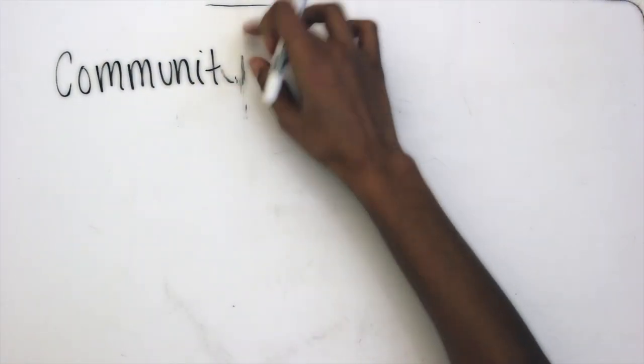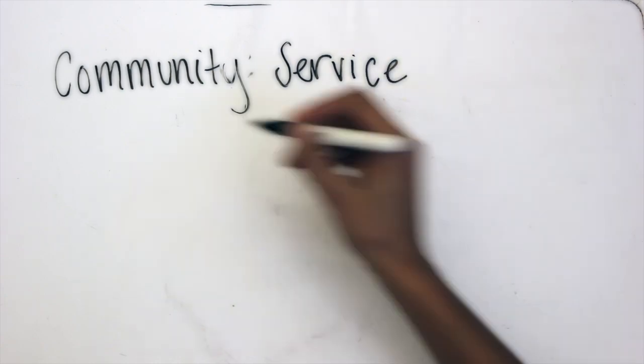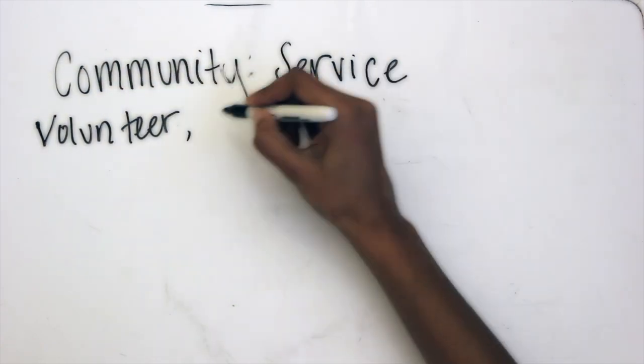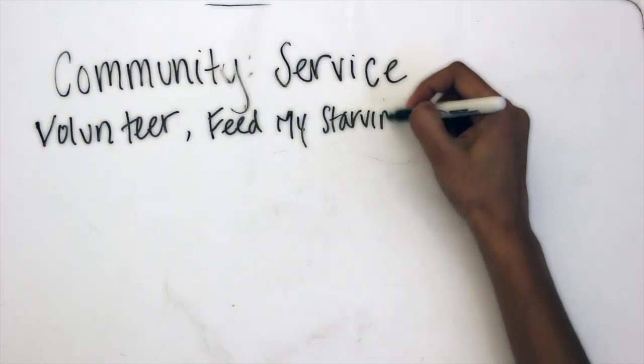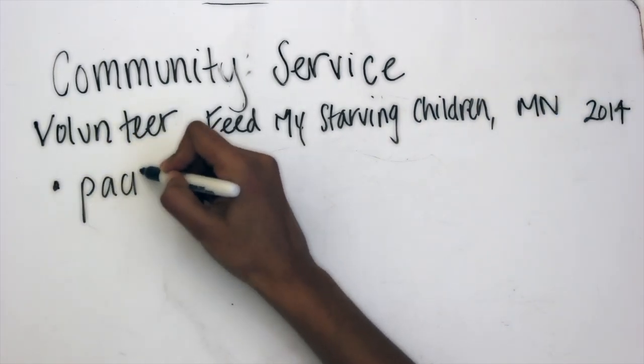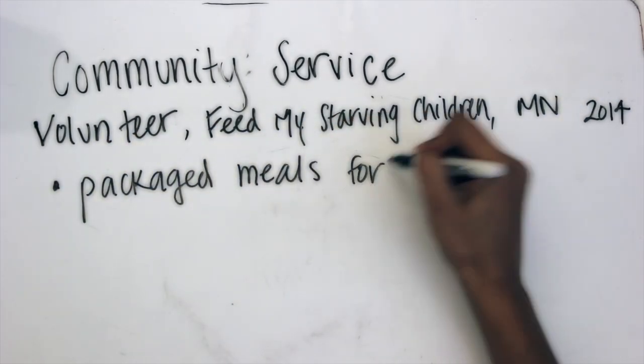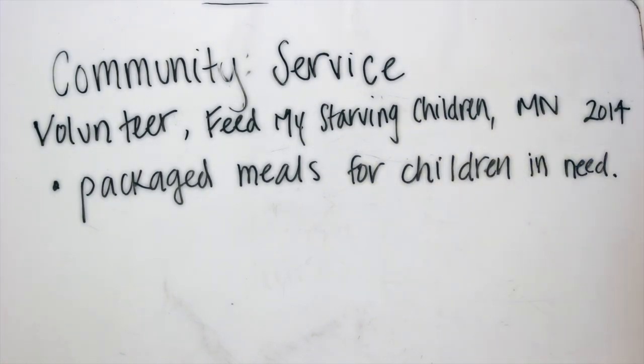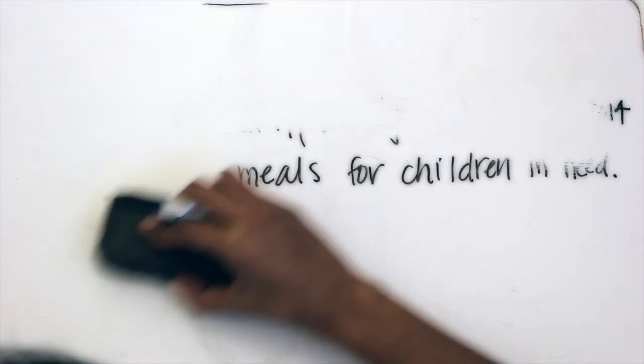After your awards, list any community service you have done. Again, begin with the most recent and give as much detail as your employer would need to know. For example, you volunteered to feed my starving children in Minnesota during 2004. Again, it's important to include a brief description.